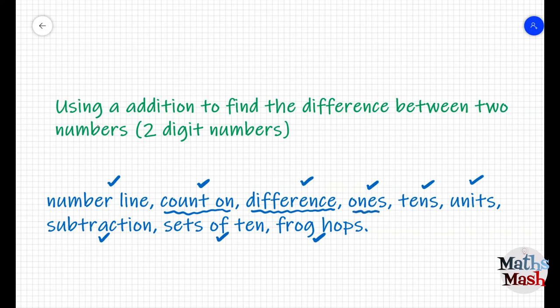Ones, also called units, are the same thing. They are the smallest whole number you can have. Tens, when you have a set of ten units or ten ones. Subtraction means the same as difference. It also means count back or it can mean take away.